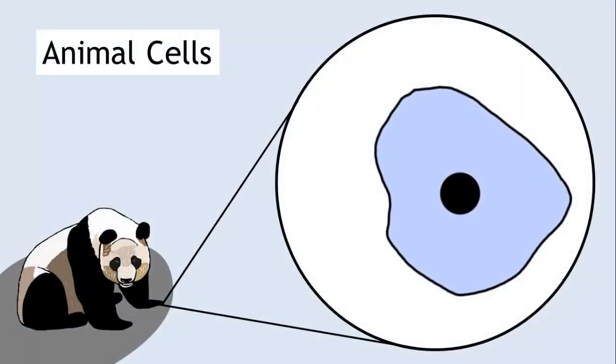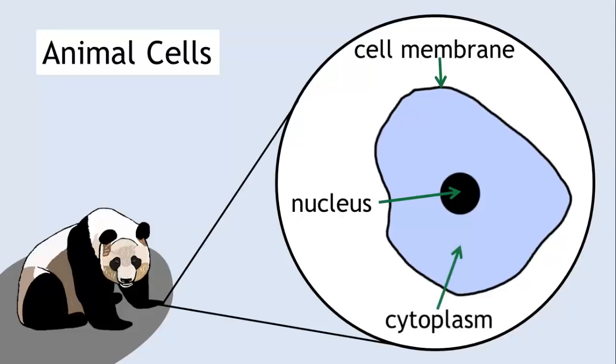Animal cells. A typical animal cell will include the nucleus, a cell membrane, and a cell cytoplasm.